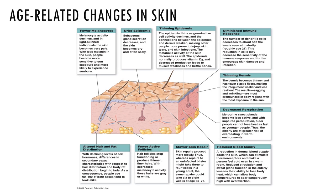Metabolic activity in the skin decreases as well. Synthesis of calcitriol (vitamin D3) decreases, which can lead to muscle weakness and brittle bones. The number of dendritic cells decreases, reducing the sensitivity of the immune response and further encouraging skin damage and infection. The dermis becomes thinner with fewer elastic fibers, making the integument weaker and less resilient, resulting in sagging and wrinkling — most pronounced in areas with the most sun exposure.